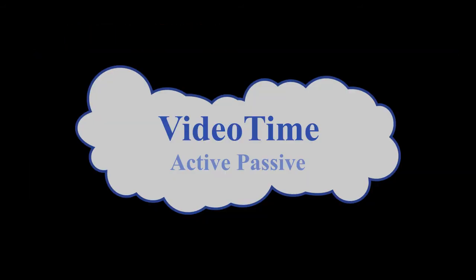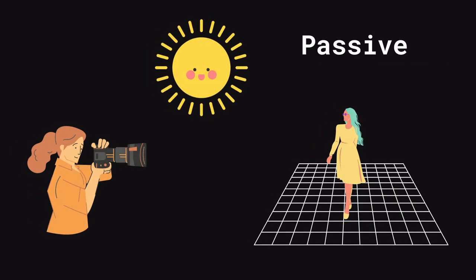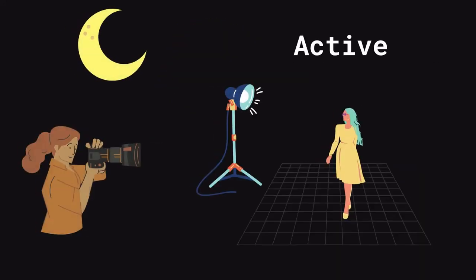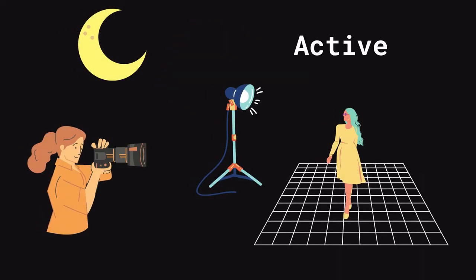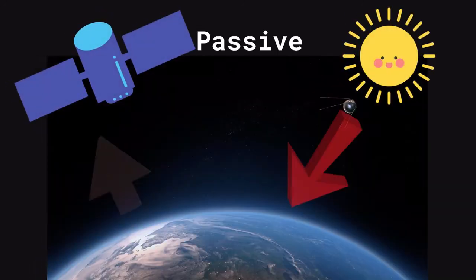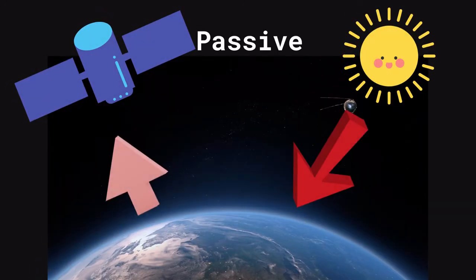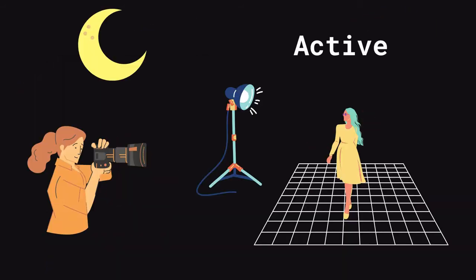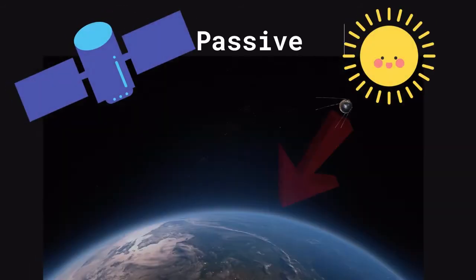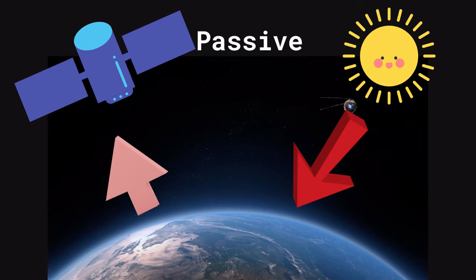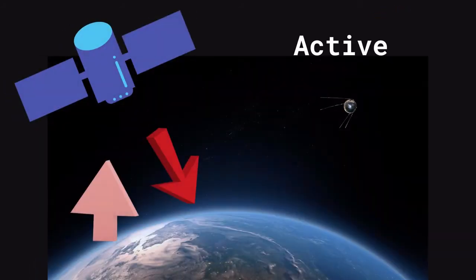I gave a small example for the passive and active remote sensing for better understanding. Here, someone is taking a photograph of another woman in sunlight. That is passive. Once the moon comes, there is no light source. Obviously, the moon has a light source but it's dark. We will use artificial light to take the photograph. That is active. The same we have to apply for remote sensing also. For passive, sun is the source, and for active, it will produce its own light and take the imageries.